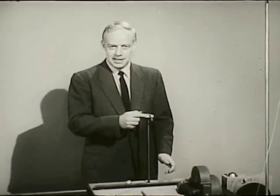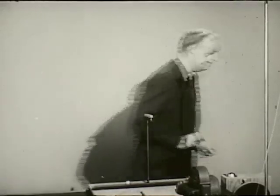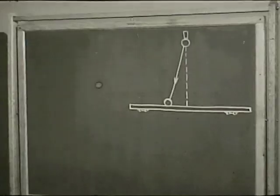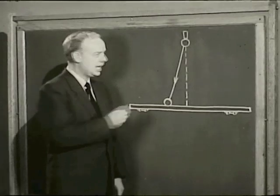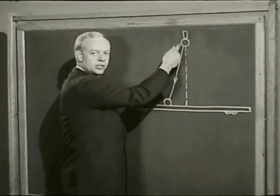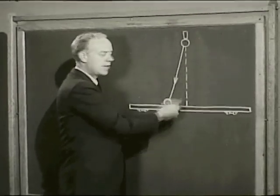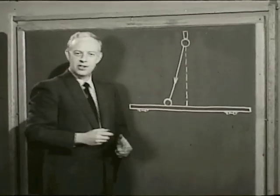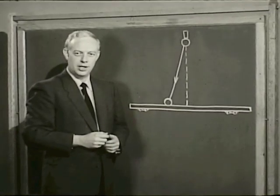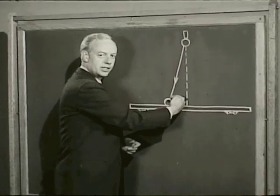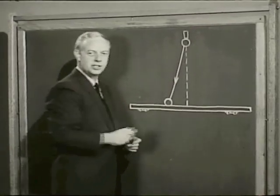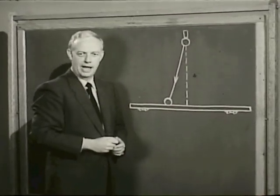Now suppose you were in this accelerated frame of reference. How could you explain this motion? Gravity is the only force acting on this ball, so it should fall straight down. But if the law of inertia is to hold, there must be a force pushing sideways on the ball in this direction to cause it to deviate from the vertical path.